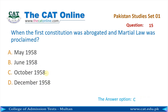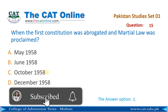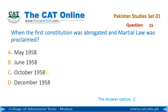Question number 15: When was the constitution abrogated and martial law proclaimed? Martial law کب لگا اور پہلا constitution کب منسوخ ہوا? The correct answer is C — October 1958.